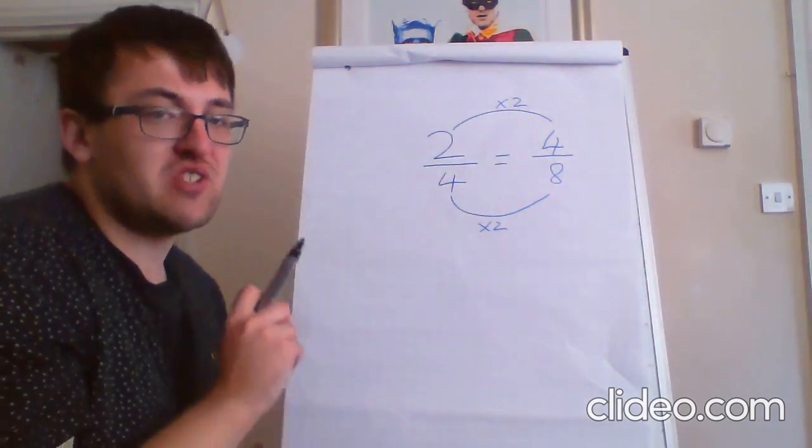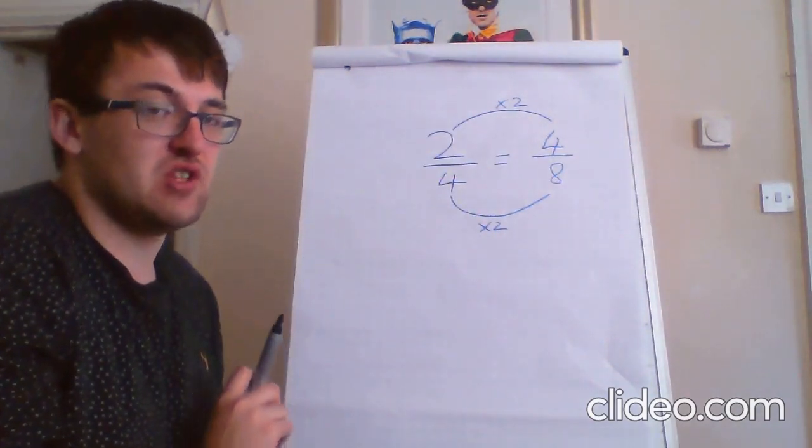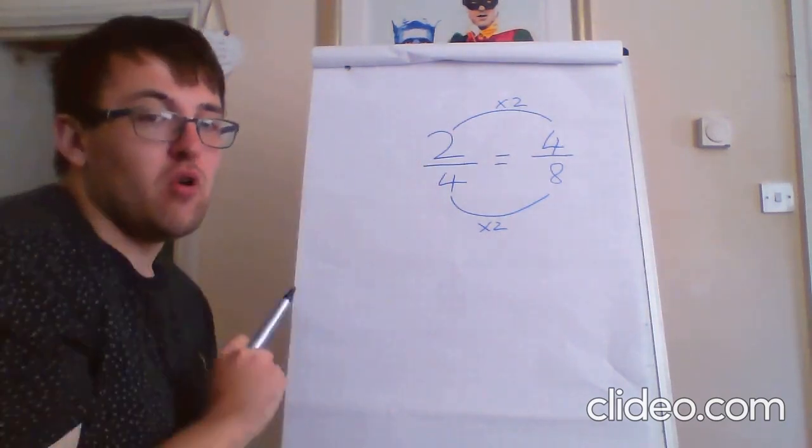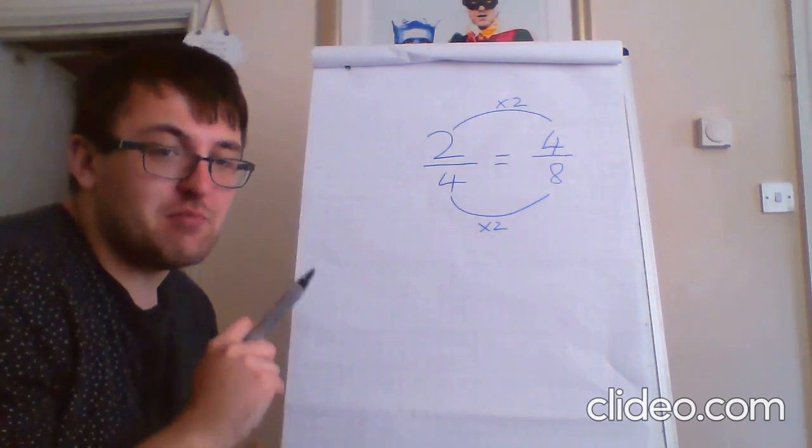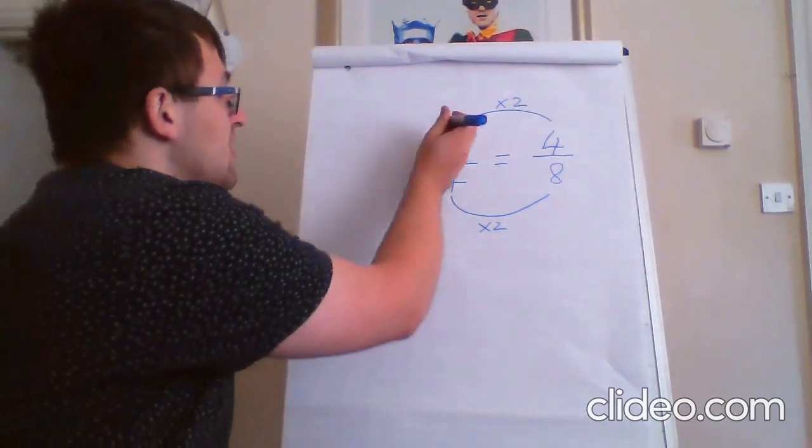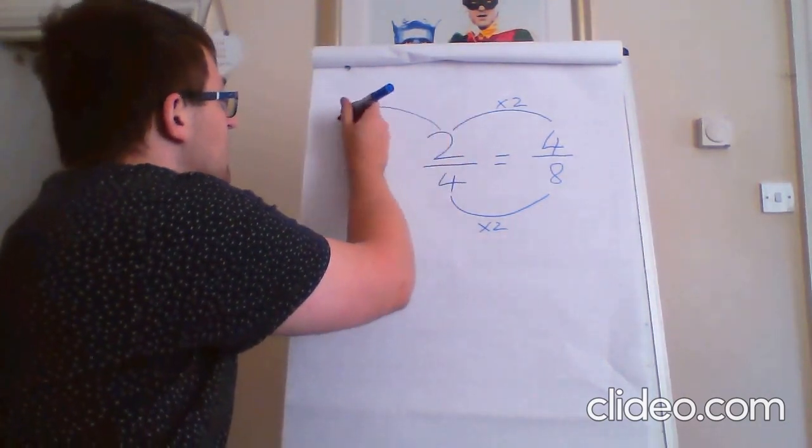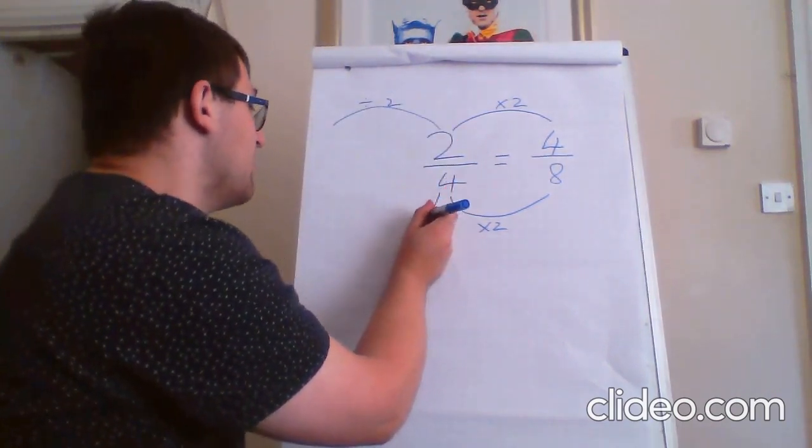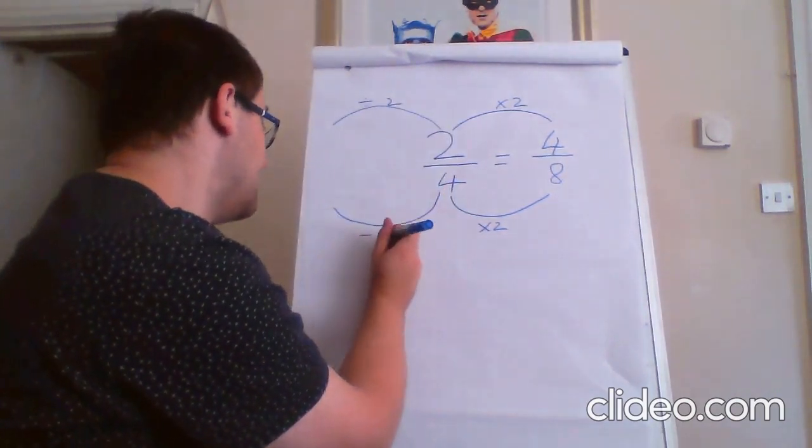Now, we don't have to just times to find equivalent fractions. We could also divide. Two and four can both be divided by two. So, let's see what that gives us. I'm going to go backwards this time. So, divide it by two.